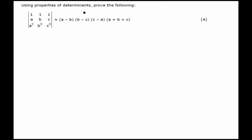Hello students. In this question we have to use the properties of determinants and prove that the determinant of [1, 1, 1; a, b, c; a³, b³, c³] is equal to (a - b)(b - c)(c - a)(a + b + c).